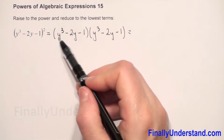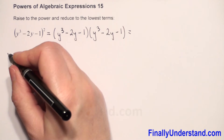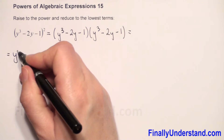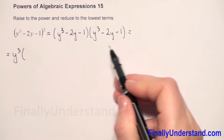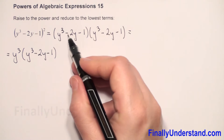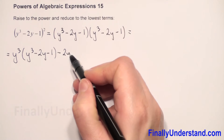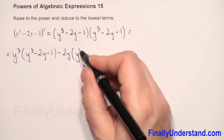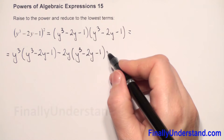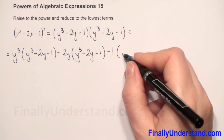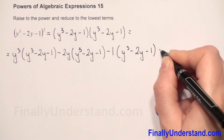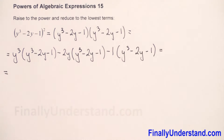We have to multiply every expression in the first parenthesis by every expression in the second parenthesis. First, y³ times the whole expression in the parenthesis: y³ minus 2y minus 1. Next, negative 2y multiplied by y³ minus 2y minus 1, and last, negative 1 multiplied by y³ minus 2y minus 1.